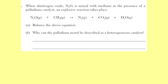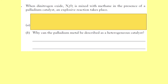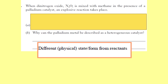Another question: when dinitrogen oxide is mixed with methane in the presence of a palladium catalyst, an explosive reaction takes place. Why can the palladium metal be described as a heterogeneous catalyst? The answer is that dinitrogen oxide and methane are both gases, but palladium metal is a solid — it is in a different physical state from the reactants, which makes it a heterogeneous catalyst.